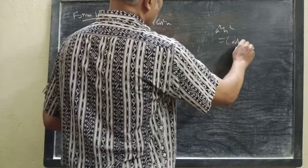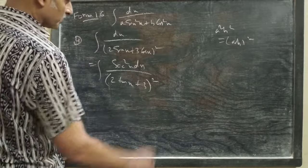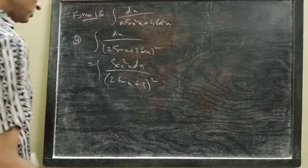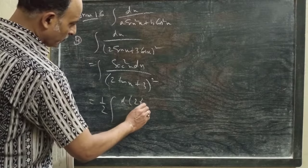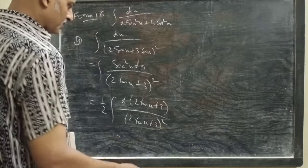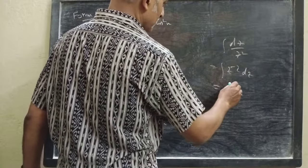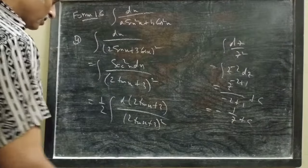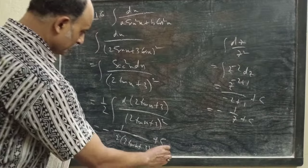Because sec²x = (sec x)², sec x enters inside the bracket. So 2·sin x·sec x = 2·tan x, giving (2·tan x + 3)² in the denominator. We can write (1/2)·d(2·tan x + 3) by (2·tan x + 3)². This is equivalent to ∫dz/z², that is ∫z⁻²·dz = z⁻¹/(−1) + c. So the answer is −1/(2·(2·tan x + 3)) + c.